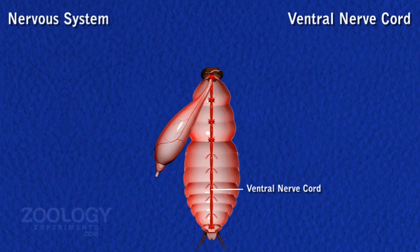The ventral nerve cord bears nine ganglia: three in thorax and six in abdomen. The last abdominal ganglion is the largest and consists of fused ganglia of the posterior abdominal segments.